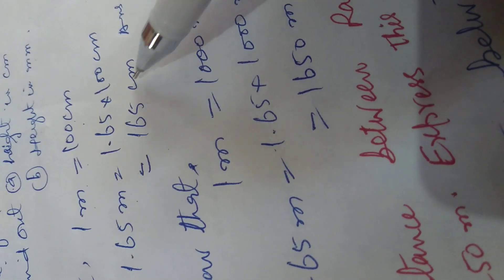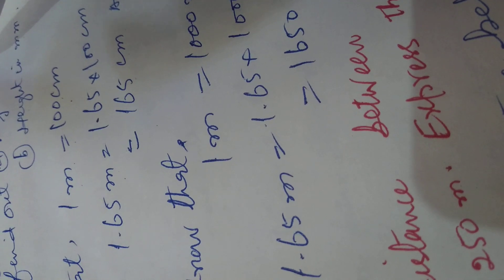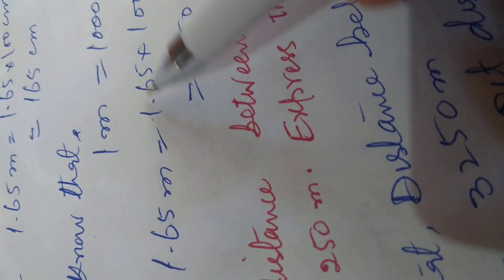Therefore, 1.65 meters is equal to 165 centimeters. We also know that 1 meter is equal to 1000 millimeters, so 1.65 meters is equal to 1650 millimeters.